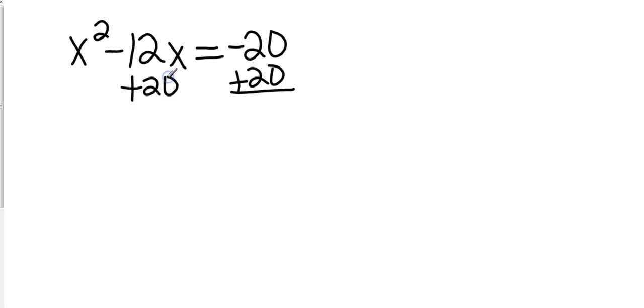Remember I can only combine like terms, so those aren't like terms. So my actual equation is x squared minus 12x plus 20 equals 0.